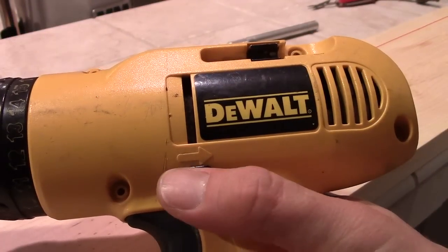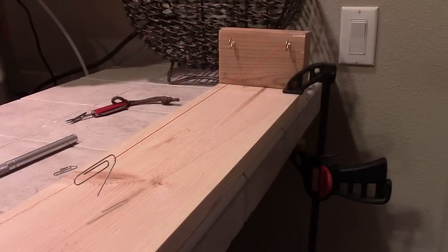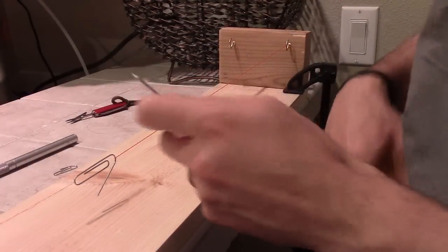The next step is we're going to reverse the direction of our drill and we're going to loop it onto the folded over section where our paper clip is right now.